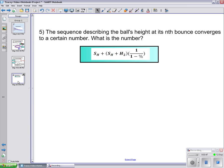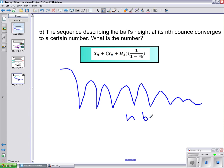Now to the final question, number five. The sequence describing the ball's height at its nth bounce converges to a certain number. What is the number? You're going to have starting height plus the starting height plus the second height times 1 over 1 minus the percentage.